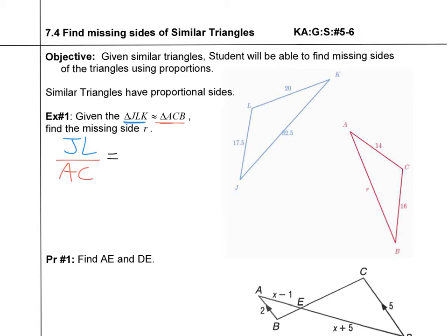I'm trying to solve for R, which is side AB on the red triangle. AB corresponds to the long side JK. So the proportion I can set up is: JL corresponds to AC, and JK corresponds to AB. That's why I can set it up that way.